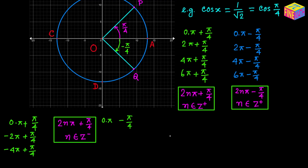If we rotate OQ one full circle in the clockwise direction, we add a negative 2pi angle, giving negative 2pi plus negative pi over 4, which is minus pi over 4. Similarly, rotating one more time clockwise adds another negative 2pi, giving negative 4pi plus negative pi over 4.